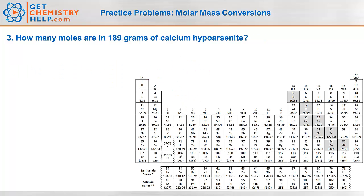Okay, number three. How many moles are in 189 grams of calcium hypoarsenite? So we're trying to turn grams, mass, into moles. So again, moles to mass or mass to moles? We use our friend here, molar mass.